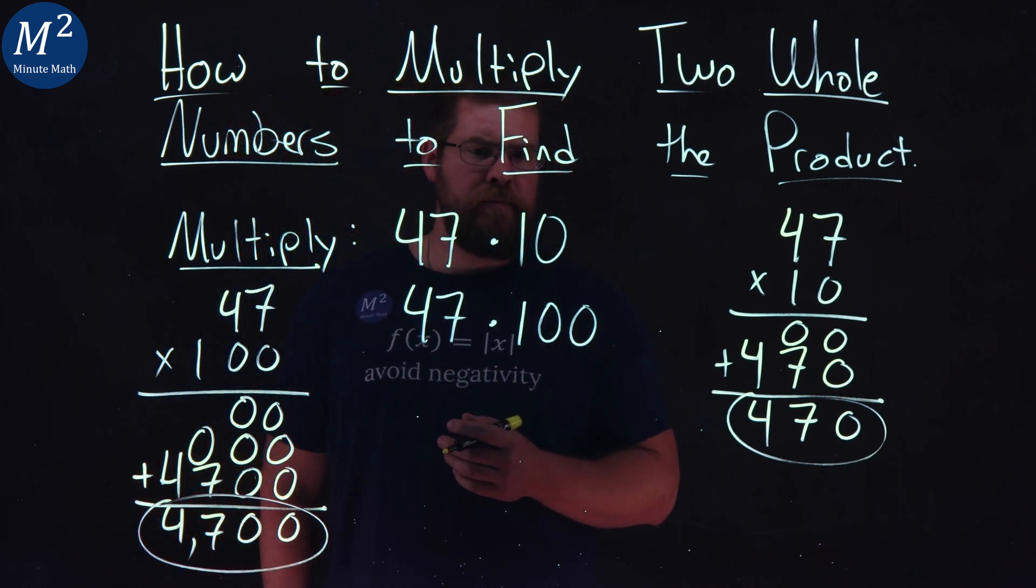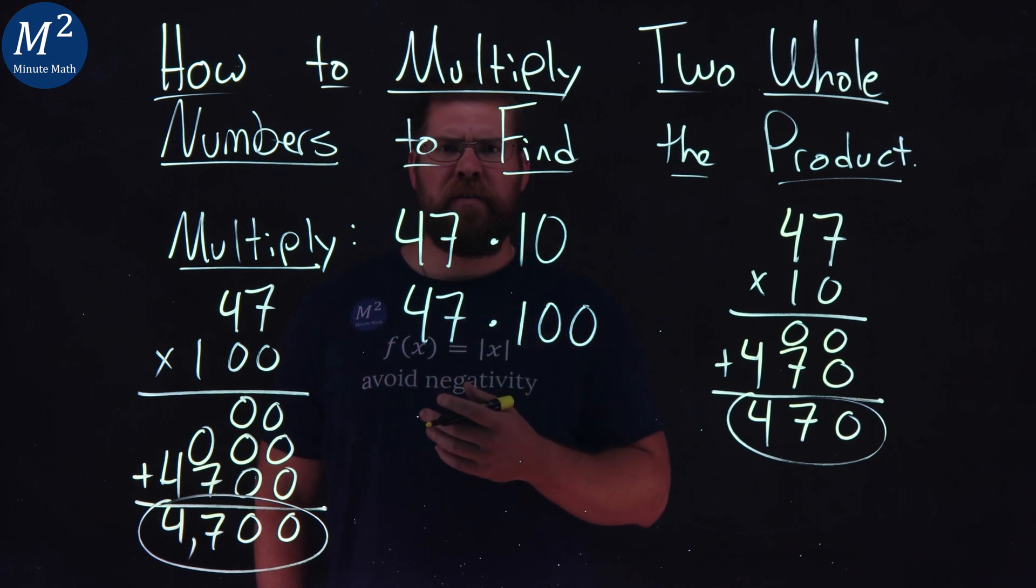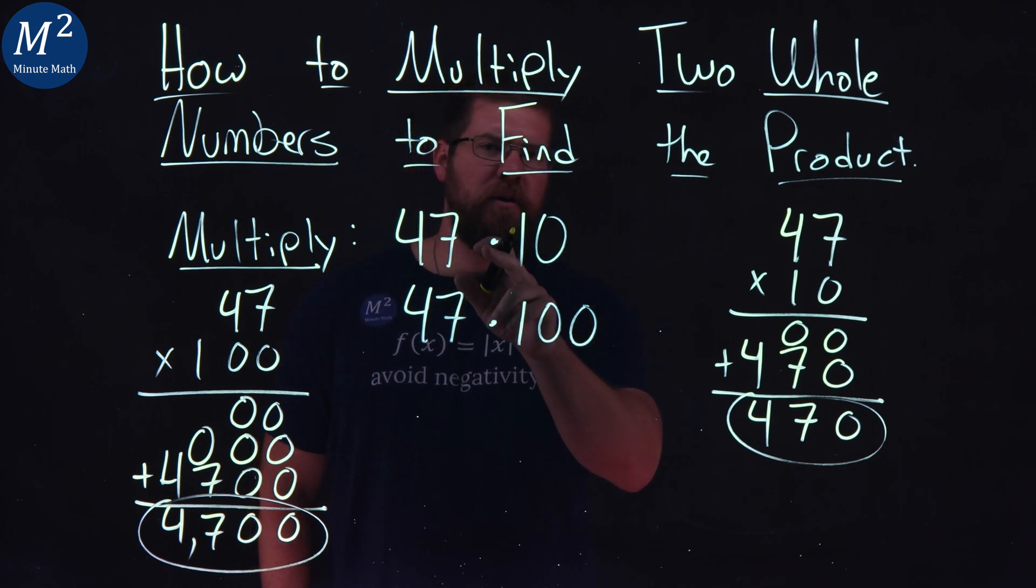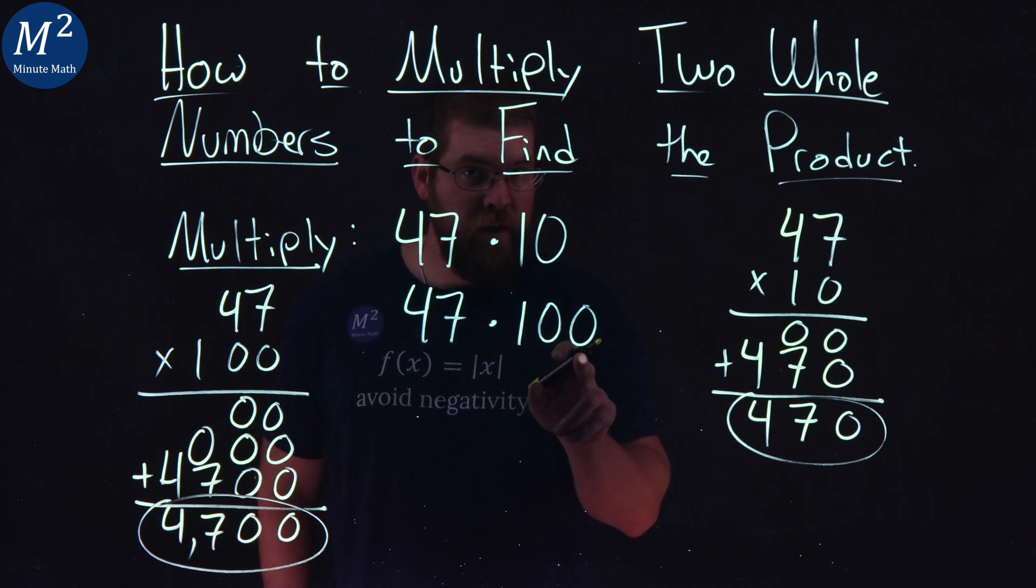Hopefully you've noticed a little pattern here. When you multiply by 10, you just add a zero. 47, you add a zero at the end, you get 470. If it has two zeros, like 100 here, 100 times 47 is 4,700.